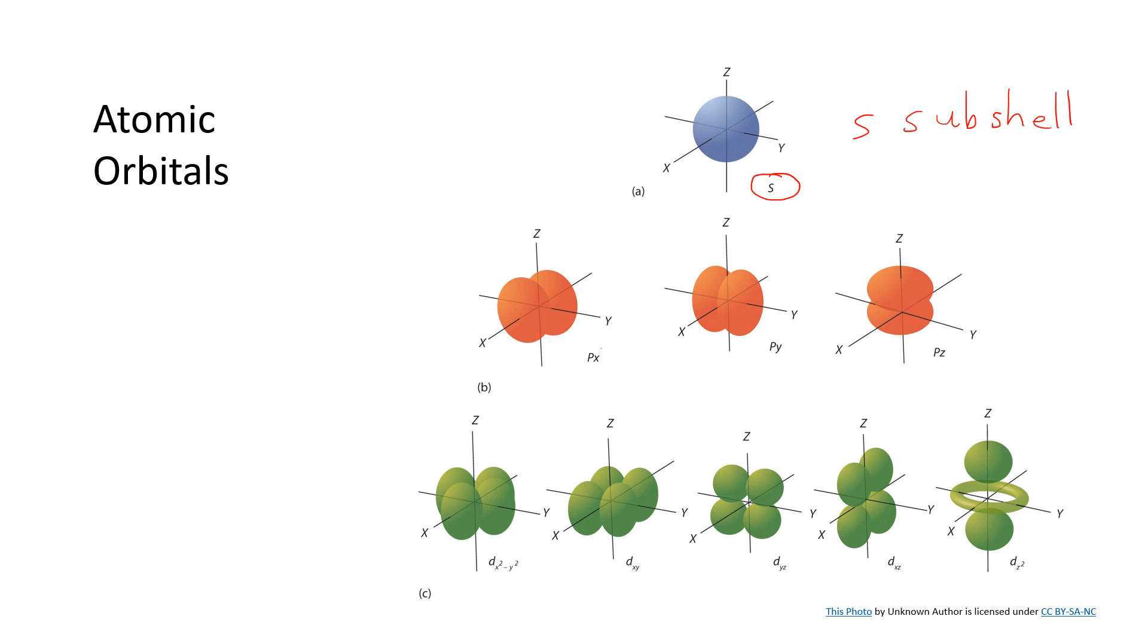Then the p orbitals, which are shown in this next layer, always occur as a set of three. The p orbitals look like two balloons that are stuck together. So if you can imagine blowing up two balloons, tying them off, and then when they were tied, tying the ties together so that you have these two balloons stuck together, the nucleus would be right at that knot right in the middle. And these three p orbitals together make up a p subshell.